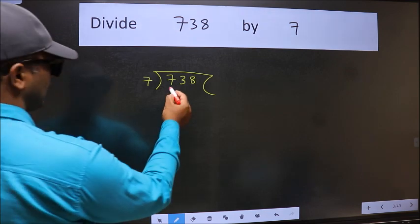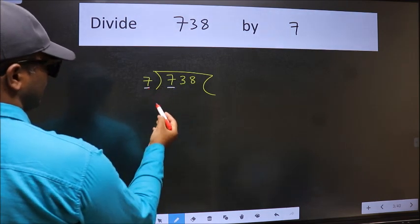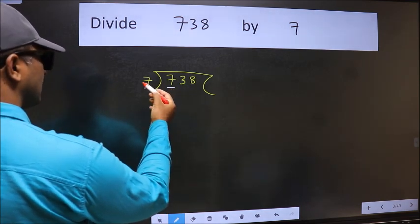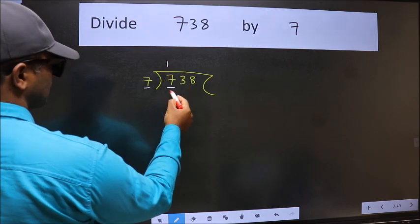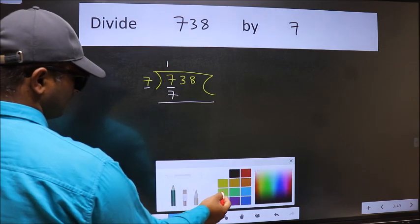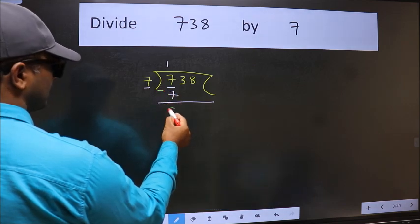Next, here we have 7 and 7 here. When do we get 7 in the 7 table? 7 once is 7. Now we should subtract. We get 0.